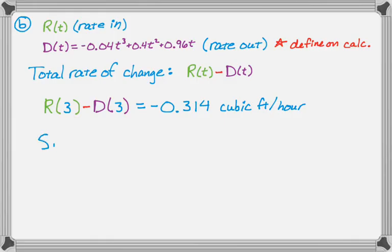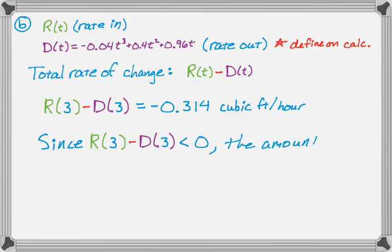And that's in cubic feet per hour. But the key thing is that since R of three minus D of three is less than 0, the total amount will be decreasing, because the total rate of change is negative. So the amount of water is decreasing. And that's part B.